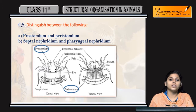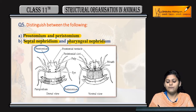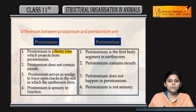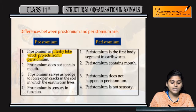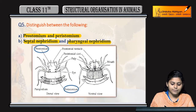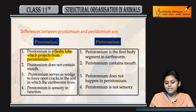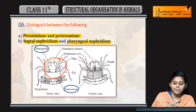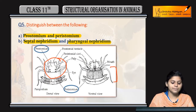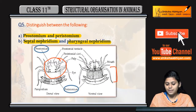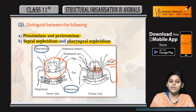The next question is to distinguish between prostomium and peristomium, and septal nephridia and pharyngeal nephridia. Prostomium is a fleshy lobe that projects from the peristomium, whereas peristomium is the first body segment in the earthworm. Prostomium does not contain a mouth, whereas peristomium does have a mouth present.